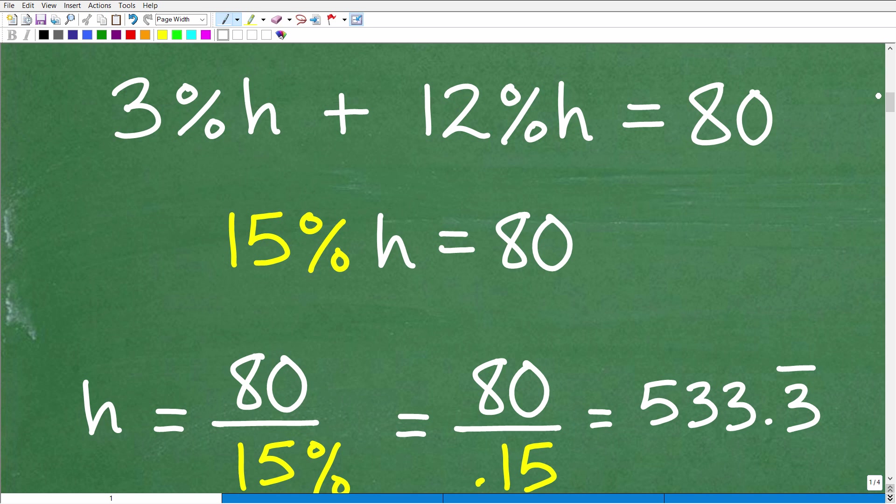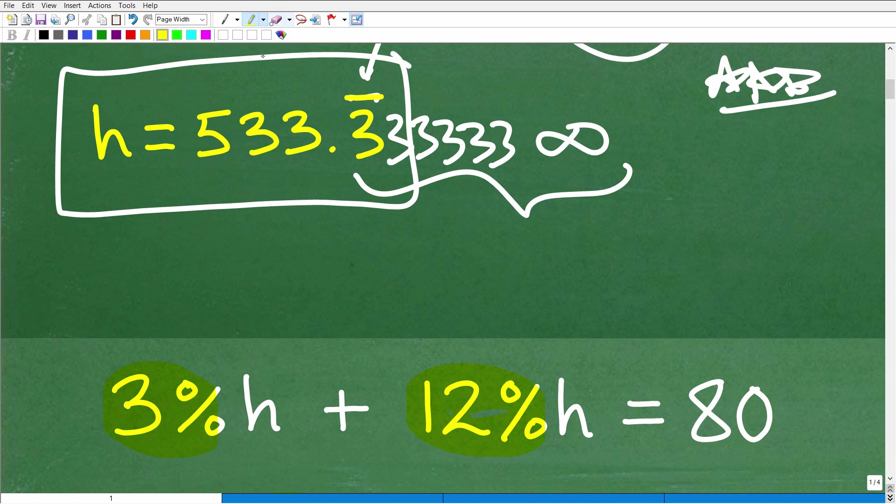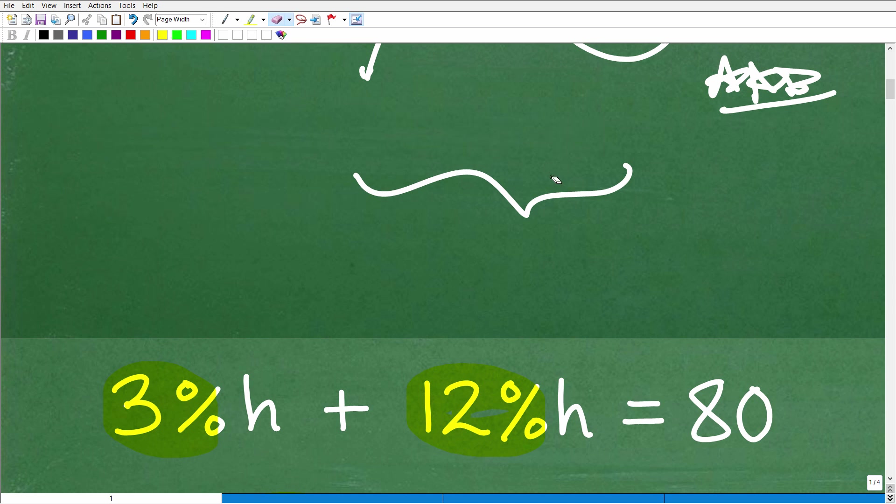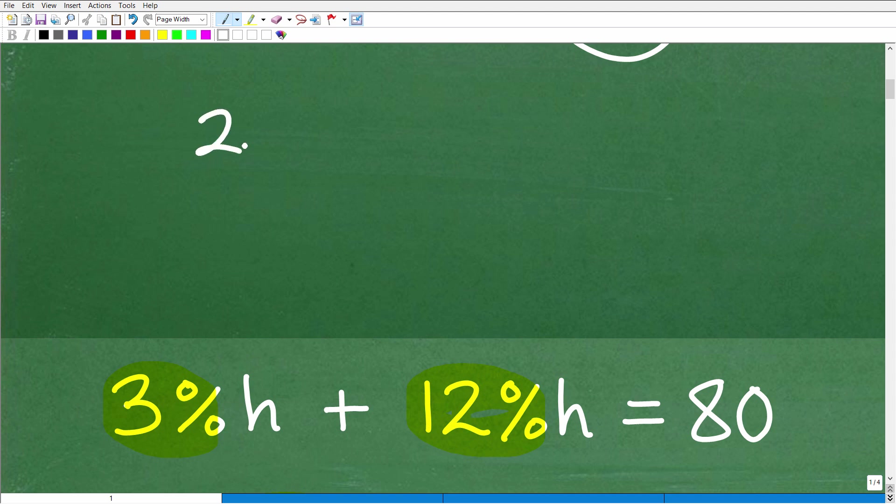So let's take a look at two approaches here, two ways to think about this. So here we have 3% of h plus 12% of h. Well, 3% and 12%, we can write percent or think of percent just as numeric values. We can express percent as a decimal. But let's just use a simple example here, just a basic algebraic example.